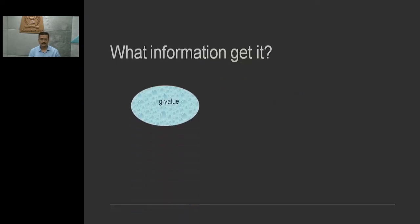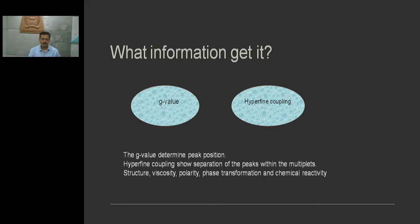So what information do we get? We get the G value. G value is the peak position, the gyromagnetic constant, a proportionality constant that determines peak position. Second is hyperfine coupling. This coupling parameter tells us how many multiplets and the separation between different peaks. In addition, we get structural information, viscosity of different compound liquids, polarity of the molecule, phase transformation, and chemical reactivity.